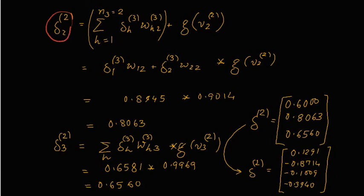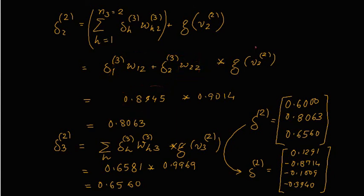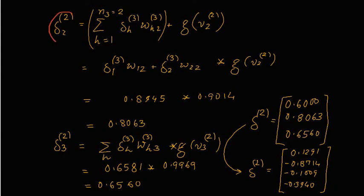Similarly we can evaluate delta 2 superscript 2: both delta values from layer 3 which we evaluated earlier and corresponding weights will be used, giving us this value, and the derivative of the activation function gives another result. Similarly delta 3 superscript 2 can be evaluated in this way. Now this delta 2 vector can be represented together, and the same way we calculated delta 2 using delta 3, we can evaluate delta 1 using a similar procedure.